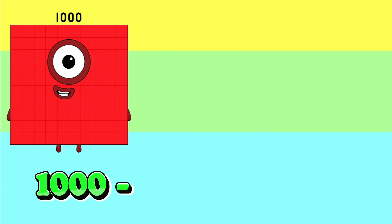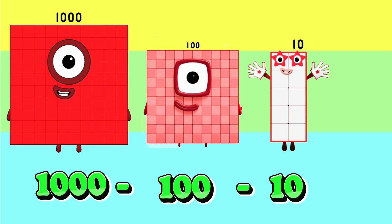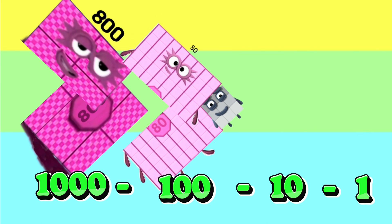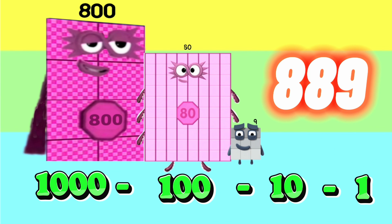1000 minus 100 minus 10 minus 1 is equals to 889.